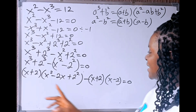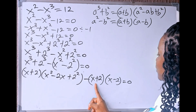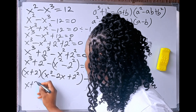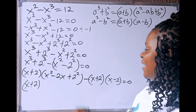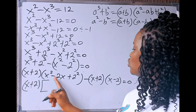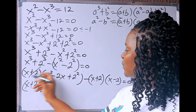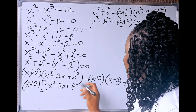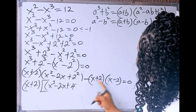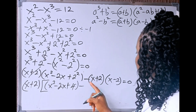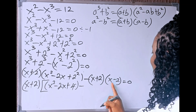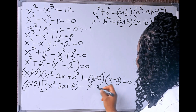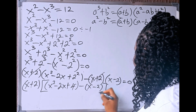Now, from here, you can see that we have (x plus 2) here and (x plus 2) here, so we have a common factor. We can bring that out by writing (x plus 2), then opening a square bracket. Dividing through, we are left with x squared minus 2x plus 4, then minus (x minus 2). All this equals 0.